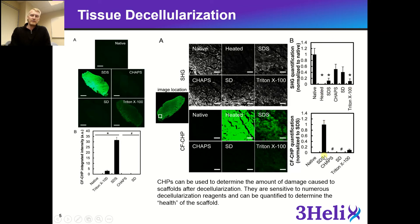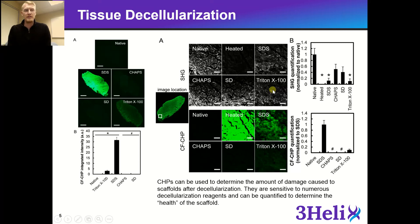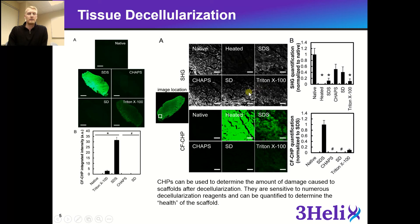When we quantified those signals, the difference between SDS compared to CHAPS, SD, and Triton X-100 was significant. When you look at SHG, you see that CHP fluorescence and SHG signal are actually inverse. This is important because you can now use CHPs as a way to determine the health of the scaffold that you are currently using.